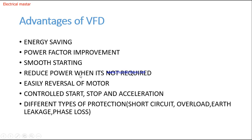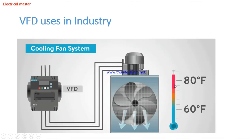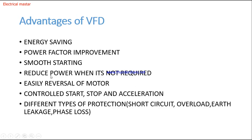Fourth, reduced power when not required: as shown in the cooling fan example, when temperature is at 60°, VFD controls the speed to 30%, reducing motor power consumption by 70%. Fifth, easy motor reversal: just give a command to change the rotation without changing cable connections. Sixth, controlled start, stop, and acceleration. Additionally, VFD provides built-in protection including short circuit, overload, earth leakage, and phase loss protection.